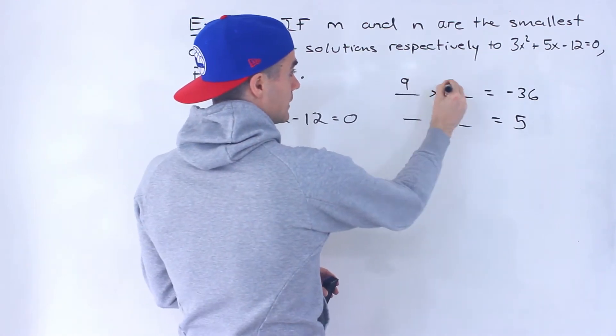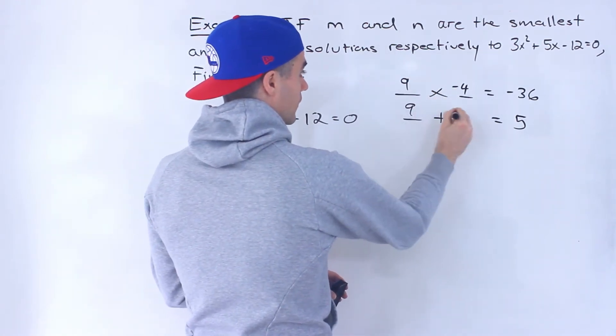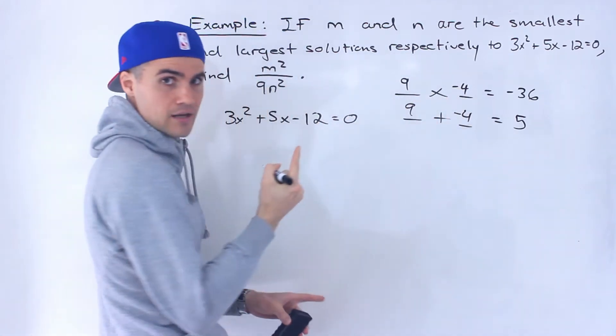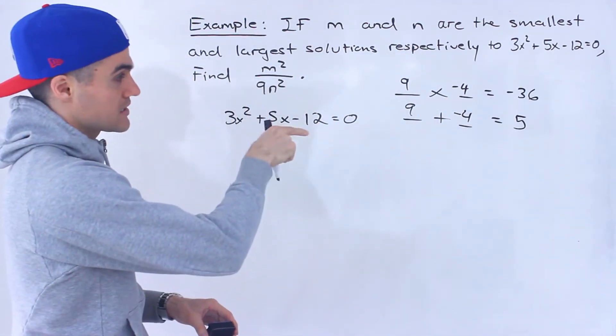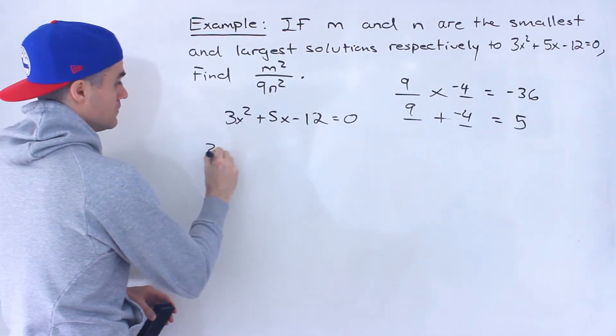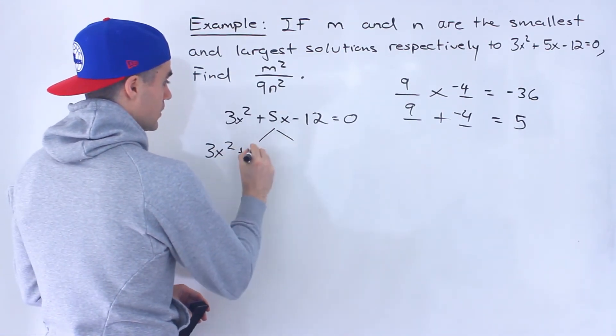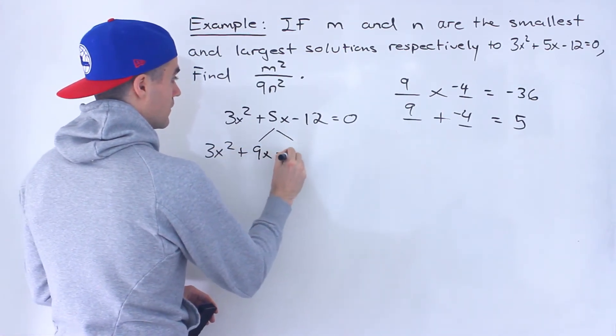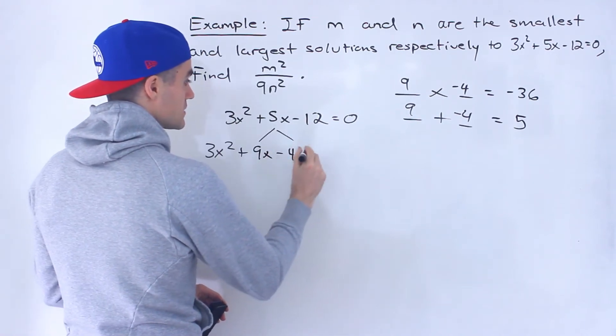Well it would be 9 and negative 4. 9 times negative 4 is negative 36, and then 9 plus negative 4 would be positive 5. So what we do is we decompose that 5x into these two terms.